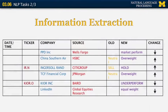The output of information extraction looks like this. There is a relation that takes seven arguments: a date or time, ticker (the stock ticker of the company), the company name, the source of the upgrade or downgrade, the old rating, the new rating, and the direction of the change. The direction was not explicitly listed in the sentences, but it can be inferred from the verb — like cut or upgrade.